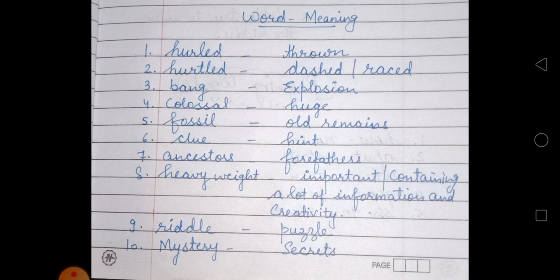I am repeating all the word meanings again: hurt — throne; hurtled — dashed or raised; bang — explosion; colossal — huge; fossil — old remains; clue — hint; ancestors — forefathers; heavy weight — important, or containing a lot of information and creativity; ninth is riddle — puzzle; tenth is mystery — secret.